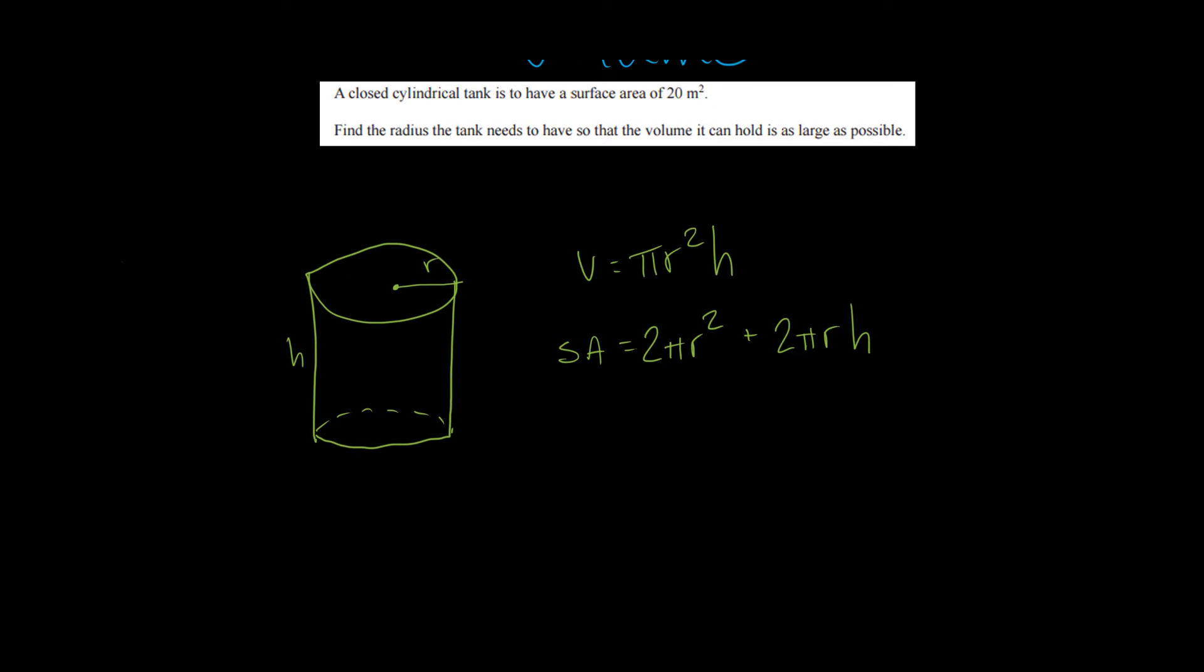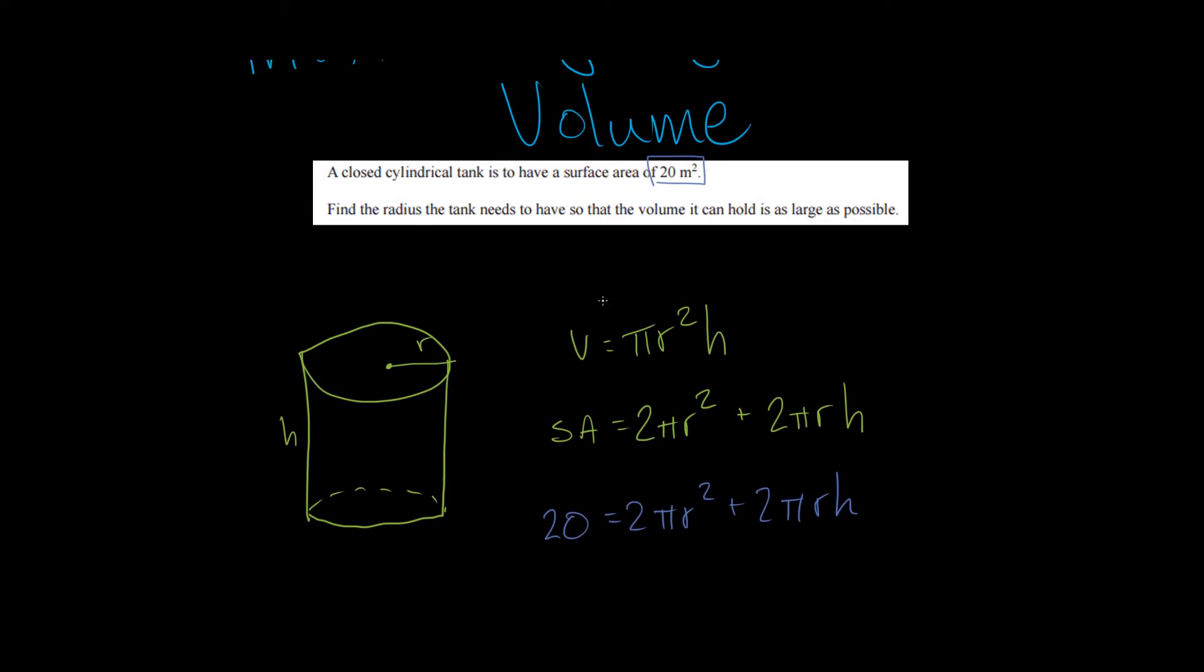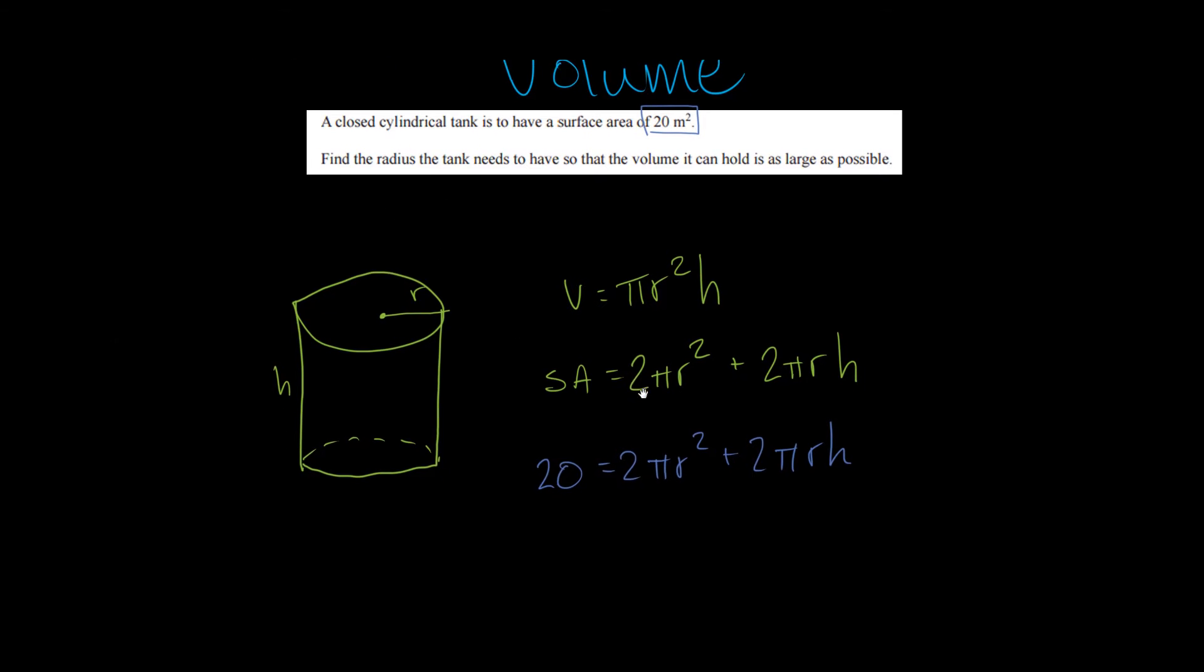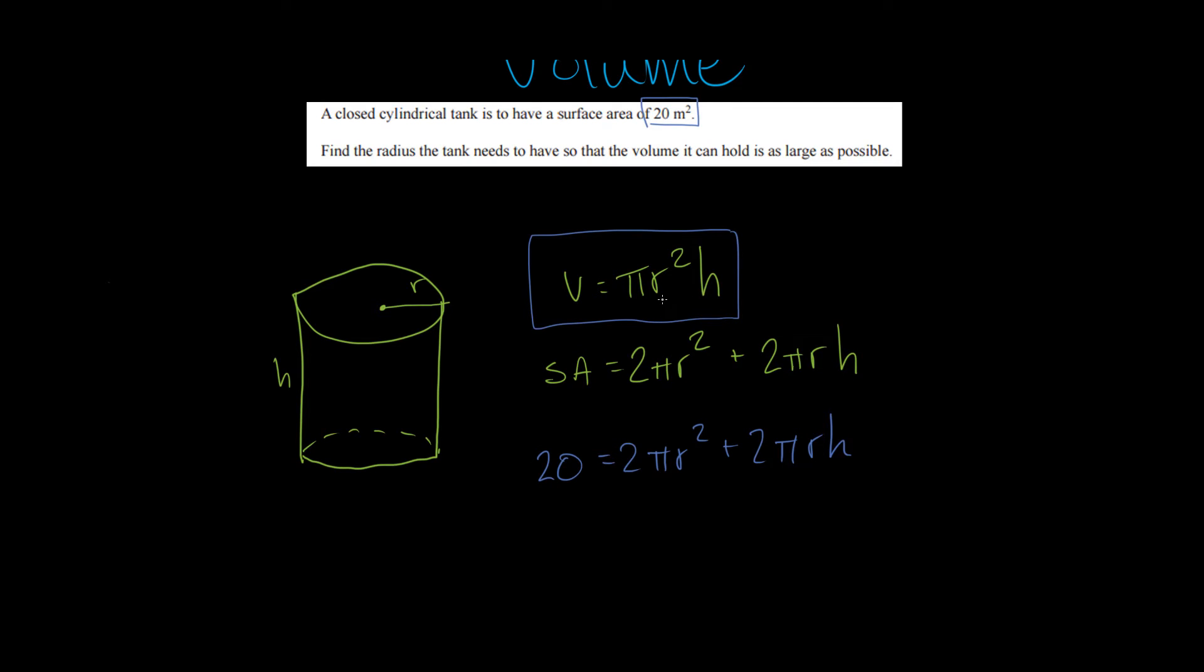Awesome. So now let's plug some values in. It tells us that the surface area is set at 20. So I'm going to say 20 is equal to 2 pi r squared plus 2 pi r h. Now what are we looking to do? We're trying to maximize our volume and find our radius.